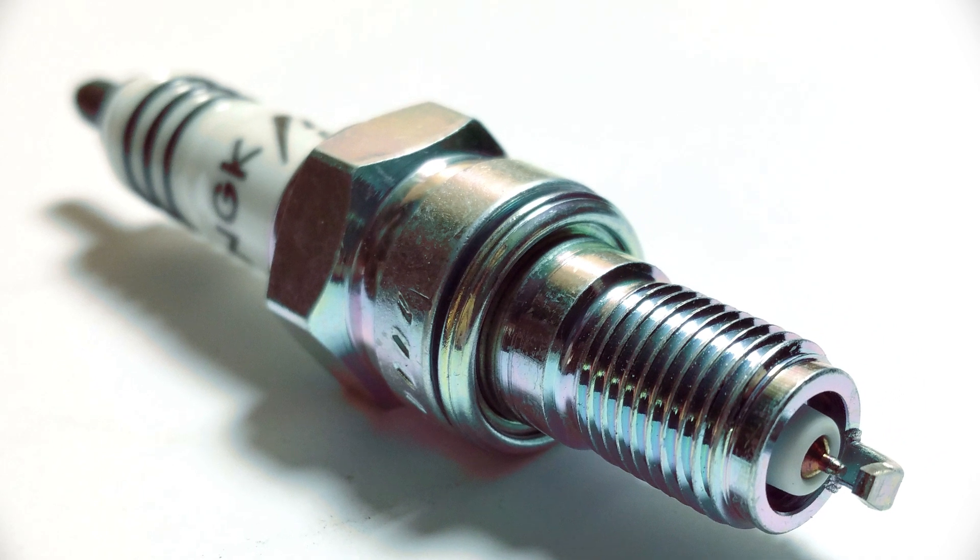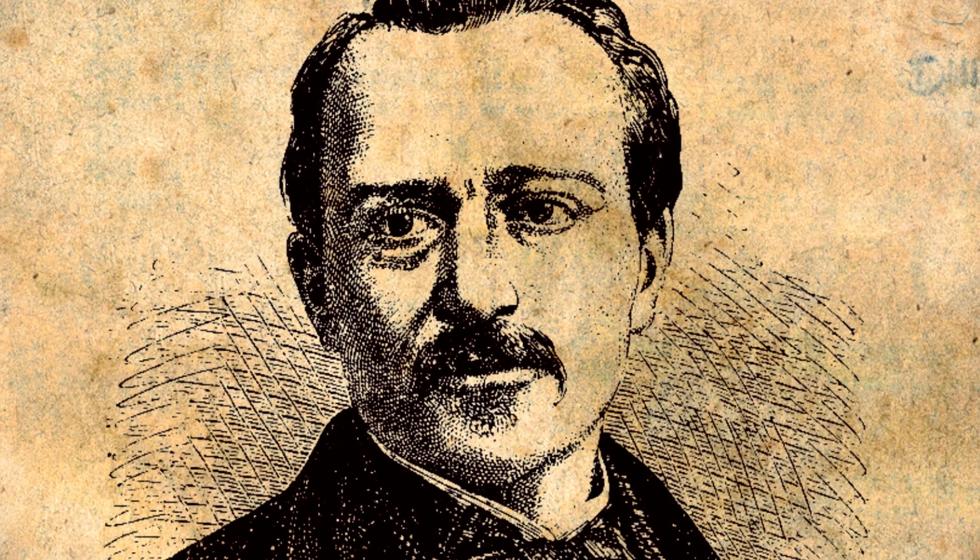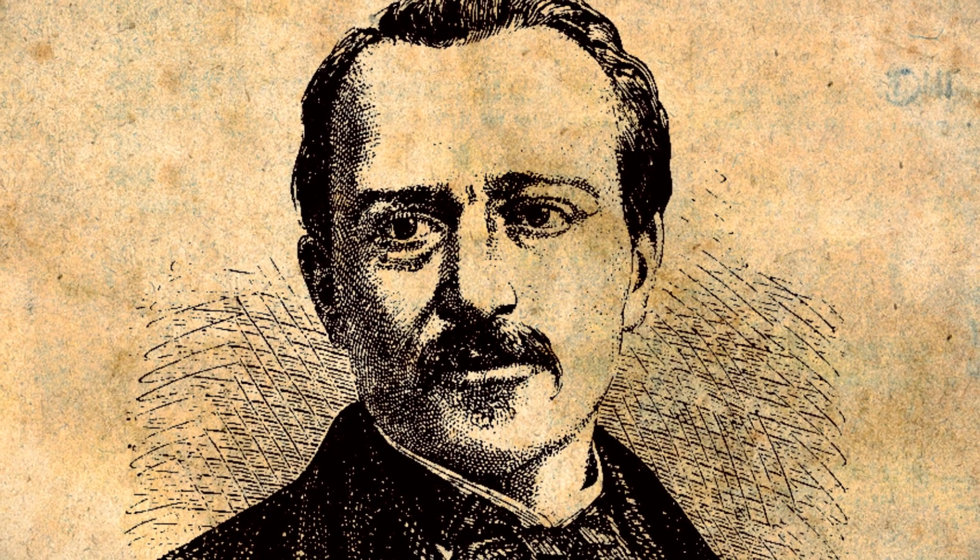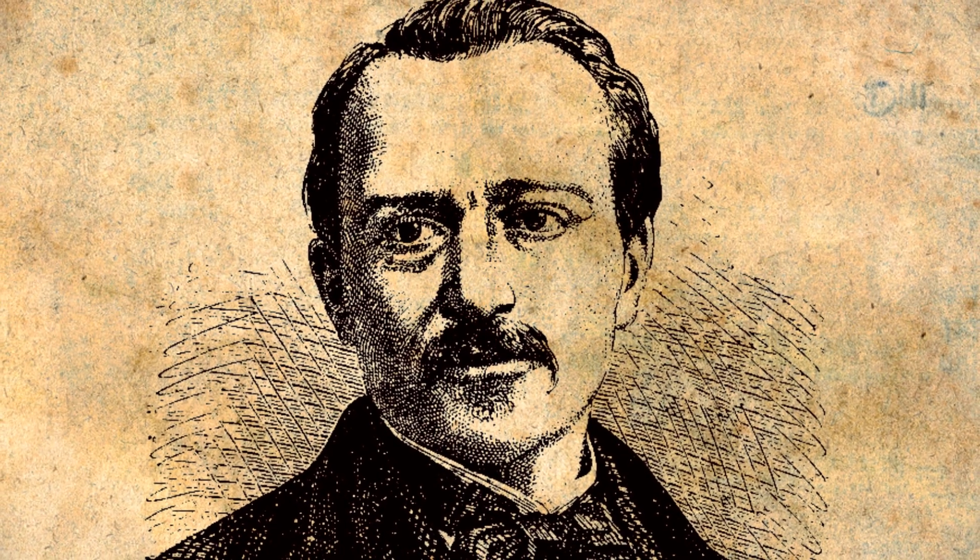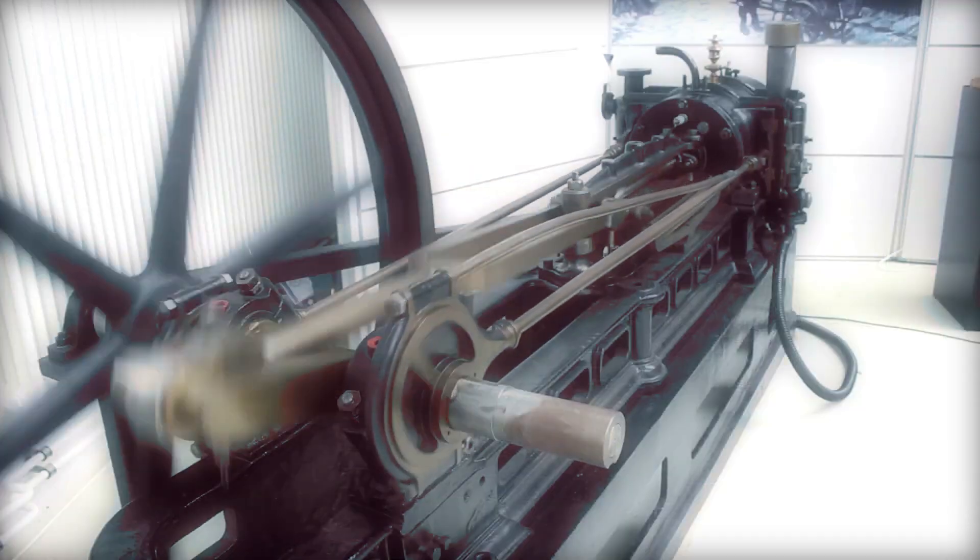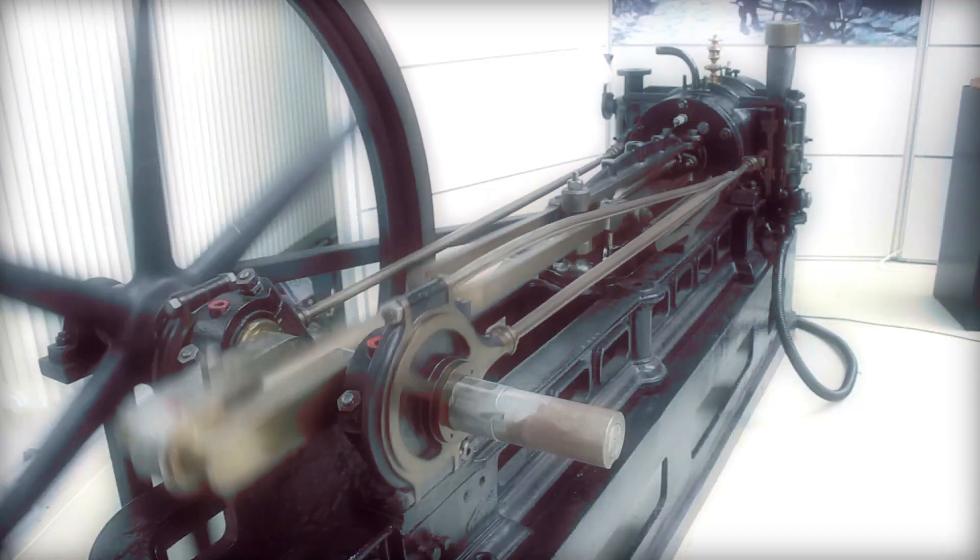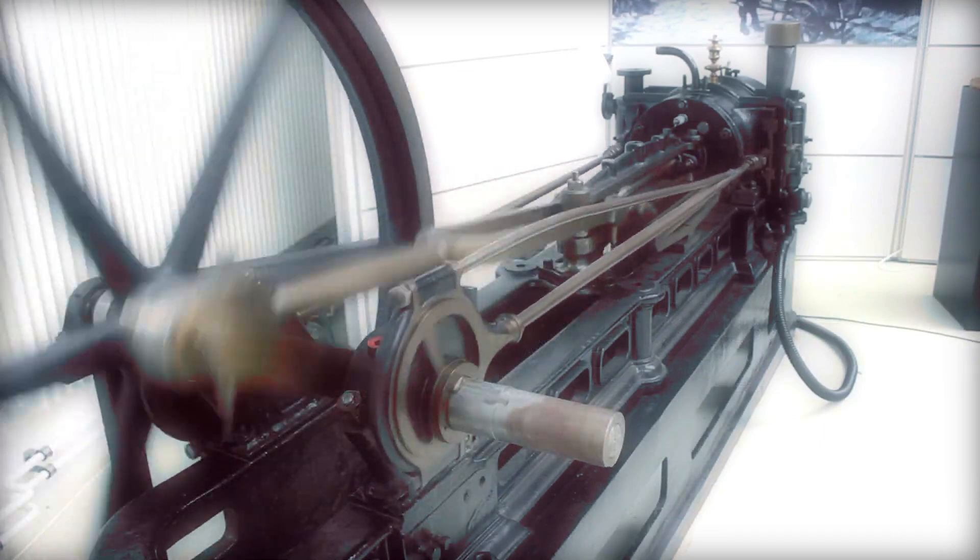The first internal combustion engine was developed in 1859 by Belgian engineer Jean-Joseph-Étienne Lenore. The first iteration burned a mixture of coal gas and air, and crudely without a compression phase.